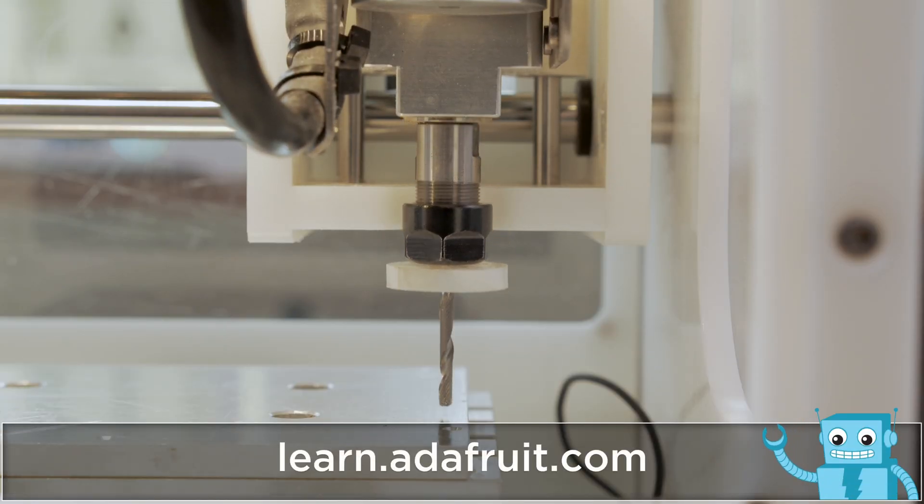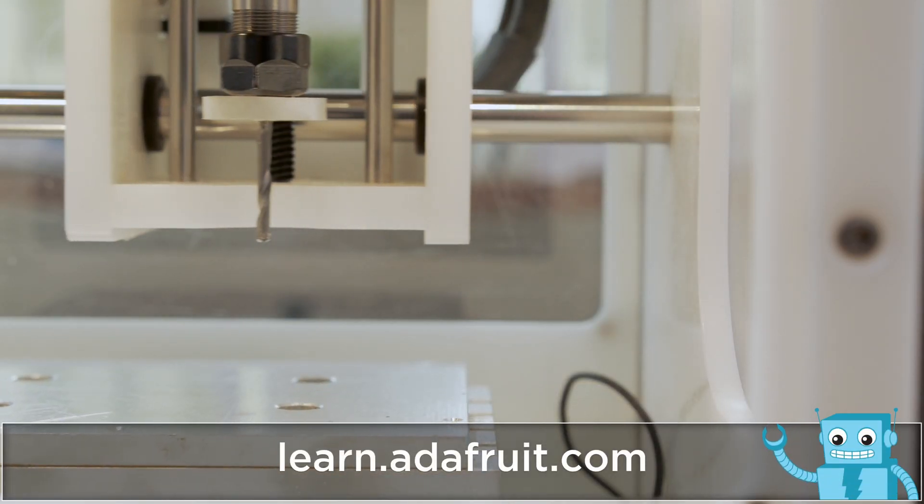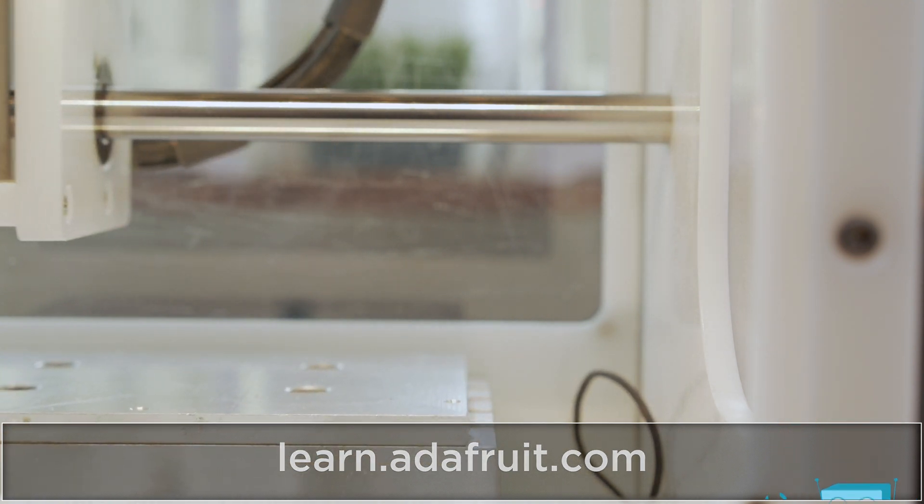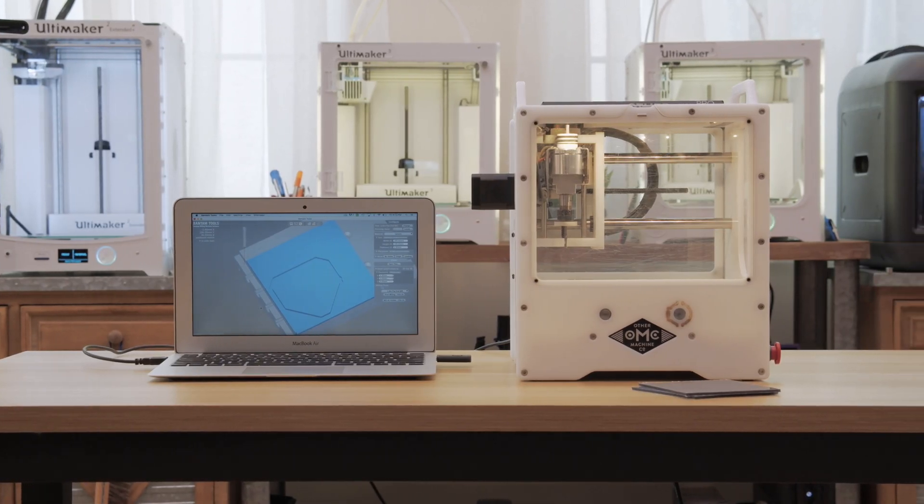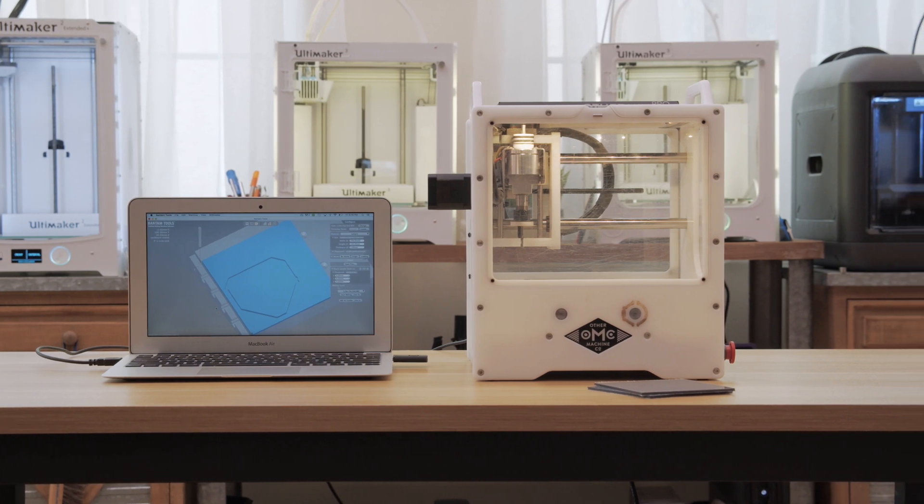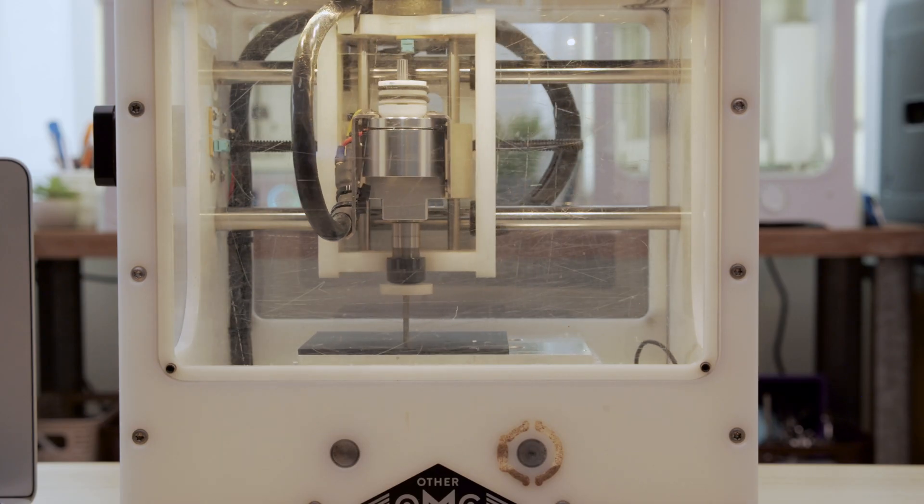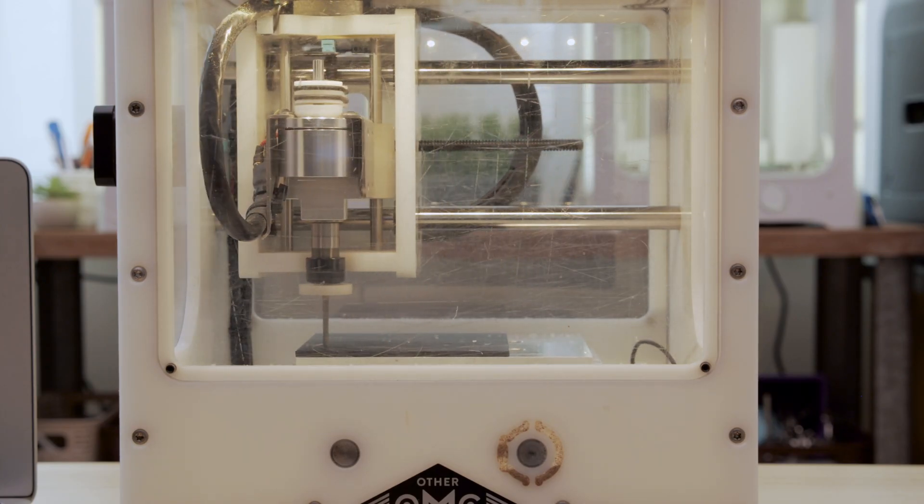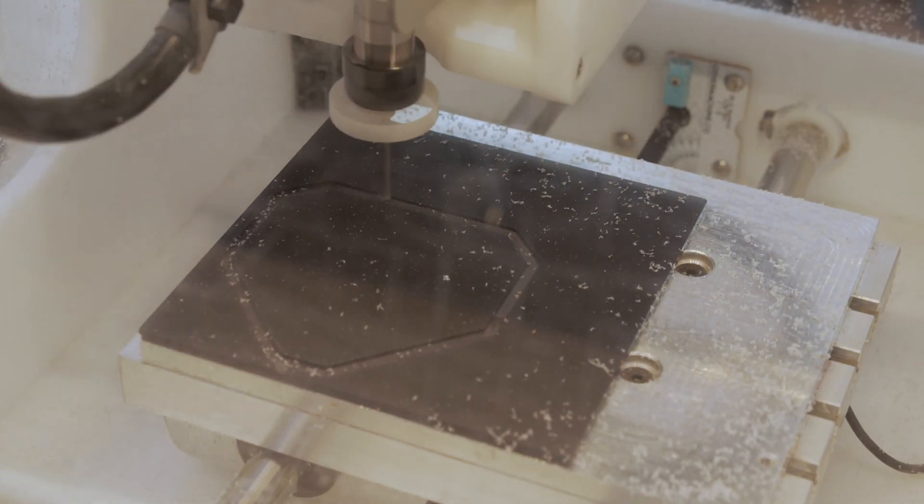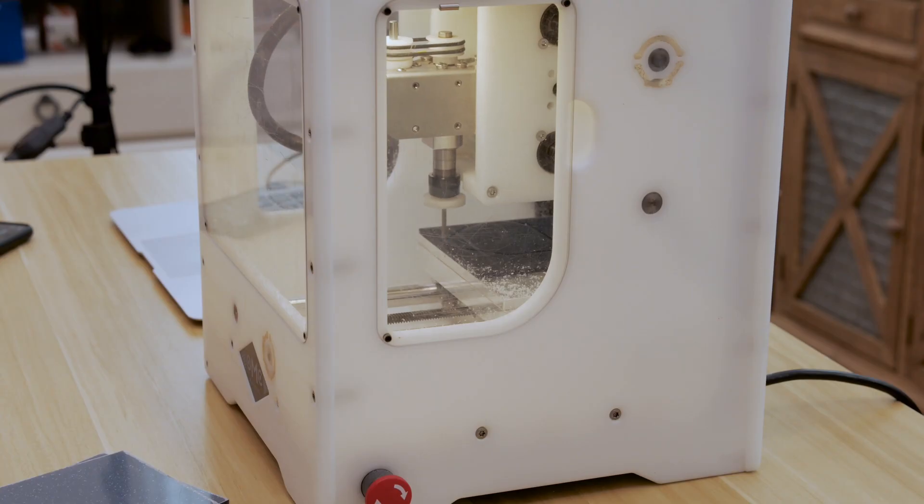Be sure to check out the learn guide for full step-by-step tutorial on building this project. For more CNC projects you can check out our Milling Monday playlist. We generated the tool paths in Fusion 360 and set up the job with the Bantam Tools software. I used the 2D contour to carve out the outline of the heart cover with a step down of 0.2 millimeters. It only takes about eight minutes to cut out our piece.